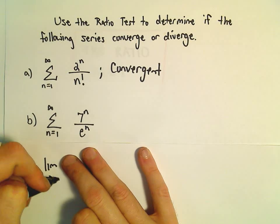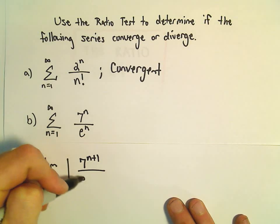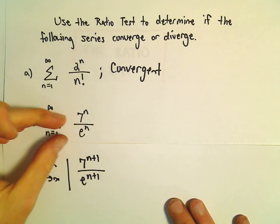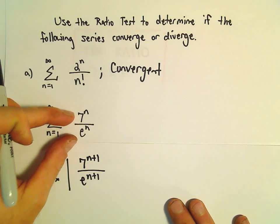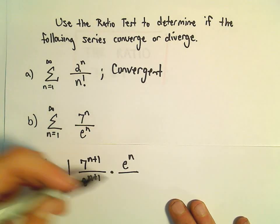So the limit as n goes to infinity. Everywhere there's an n, we're going to plug in n plus 1. And then we would divide by the original. But again, dividing by the original is equivalent to multiplying by the flip of it.